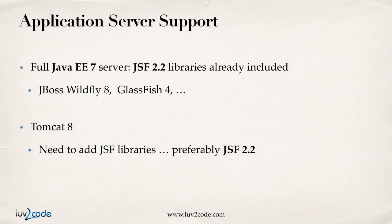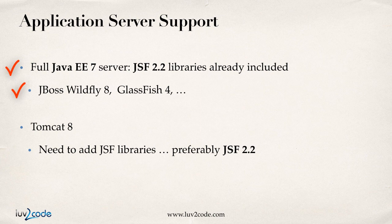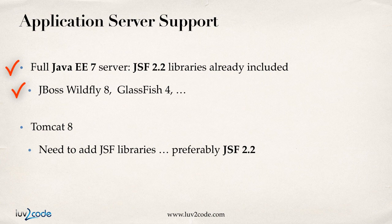In terms of application server support, if you make use of a full Java EE7 server, then the JSF 2.2 libraries are already included. Some examples include JBoss Wildfly 8 and GlassFish 4. For your given app server, you want to make sure it supports Java EE7 or higher — not all servers are up to date. Wildfly 8 and GlassFish 4 already have full support for Java EE7, which includes the JSF 2.2 libraries. So when you deploy your JSF application, there's no need to include the JSF jar files in your app.